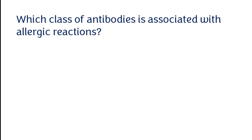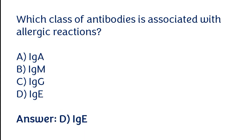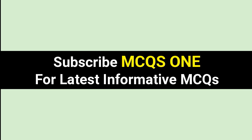Which class of antibodies is associated with allergic reactions? IgA, IgM, IgG, or IgE. The correct answer is option D — IgE is the class of antibodies associated with allergic reactions. Thanks for watching — subscribe to MCQs One for the latest informative MCQs.